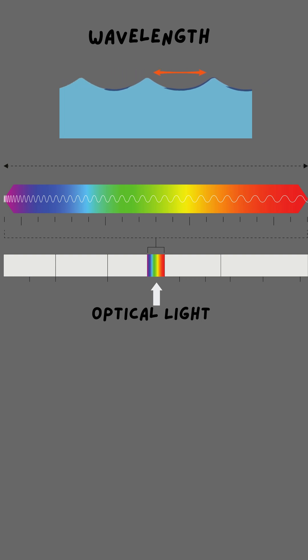Each color has a different wavelength. Red and orange light have longer wavelengths, while blue and violet light have shorter ones.